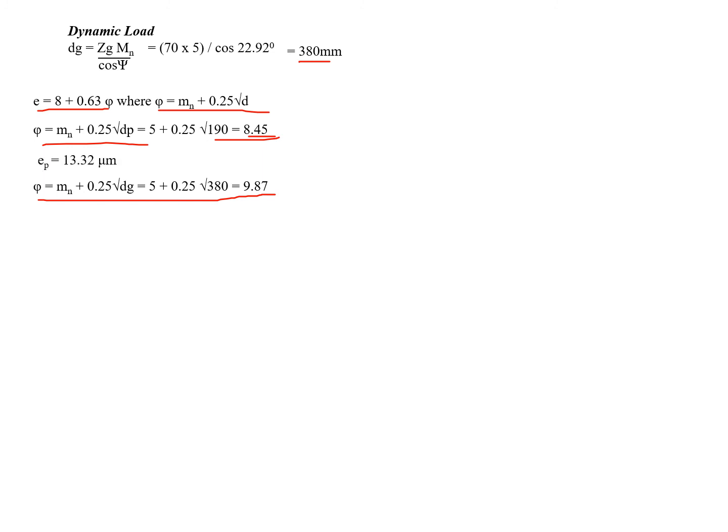Now dynamic loading. For that we need the diameter of gear, which is Zg times mn upon cos of psi, equals 570 mm. We need to find out the error also because grade is given to us in the numerical. Based on this, error on pinion is 8.45 and error on gear is 9.87. Total error is 13.22 plus 14.22, which equals 27.44 micrometers. Velocity v equals pi times dp times n upon 60 times 10 to the power 3, which is 7.16 m/s. Service velocity factor Cv is 0.673.